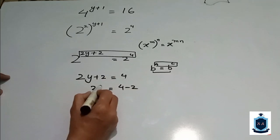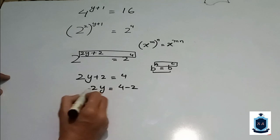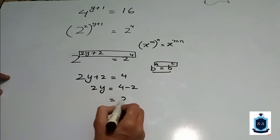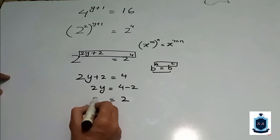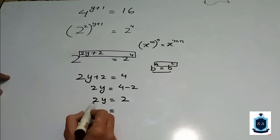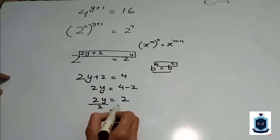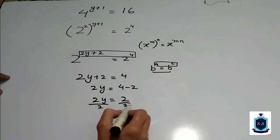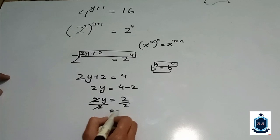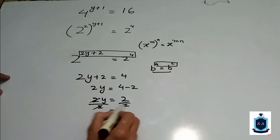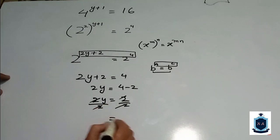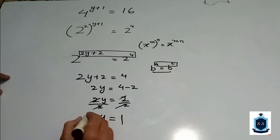Here you can see that 2y plus 2 equals 4. Then 2y equals 4 minus 2, which is equal to 2. If I divide 2y by 2, here you can see that 2 is cancelled out with 2, and 2 is also cancelled out. The answer of this equation is y equals 1.